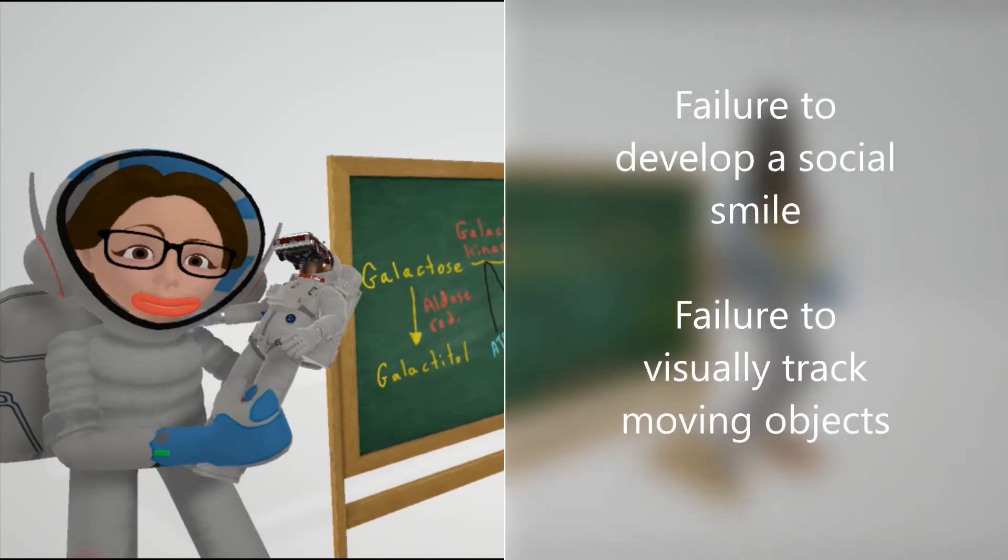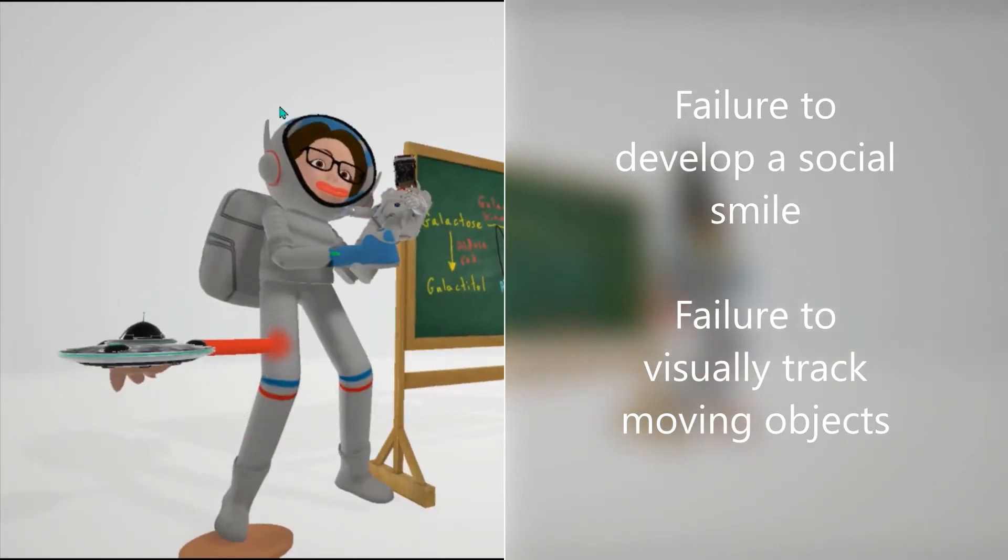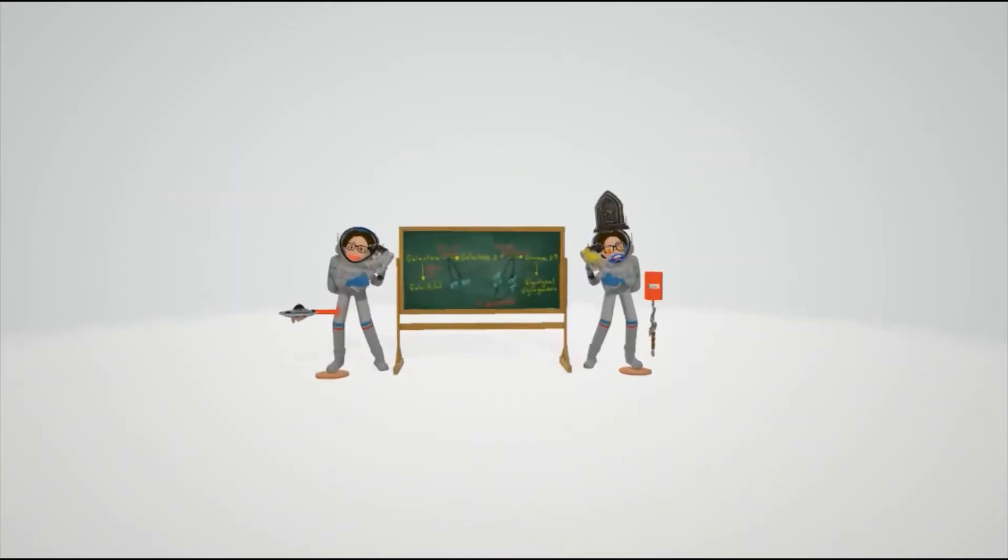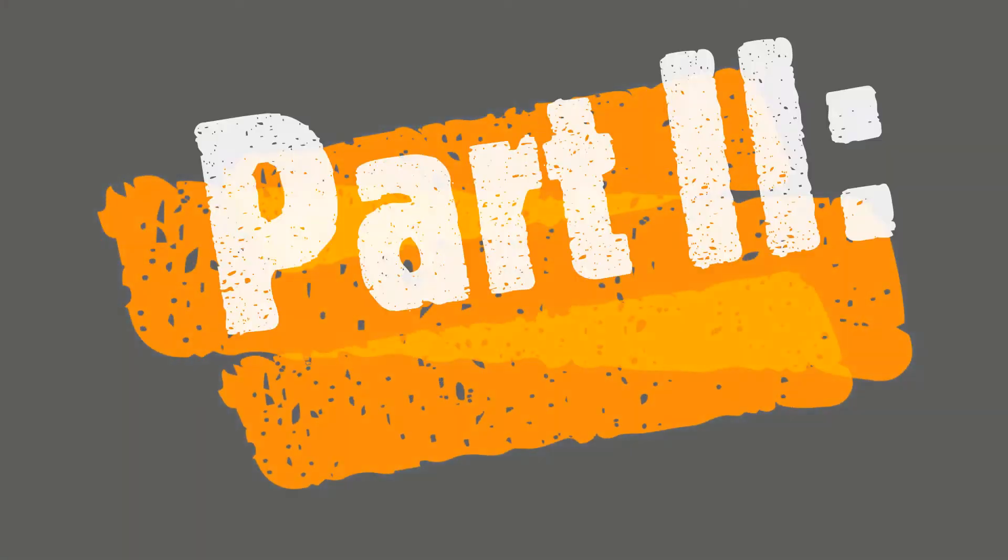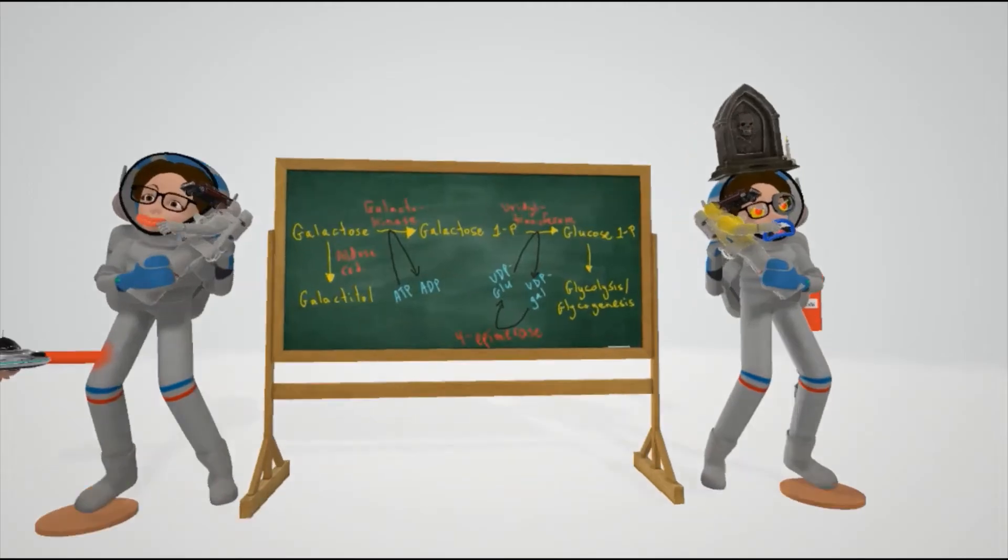This teacher is having a difficult time smiling because in galactokinase deficiency there may be failure to develop a social smile. She also doesn't realize there's something sticking out of her leg - there may be failure to visually track moving objects.